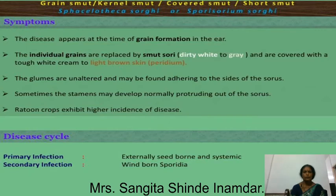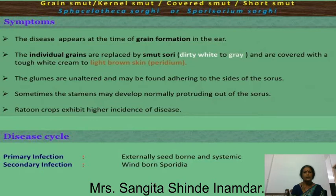Good morning everybody. The name of today's topic is the disease present on Javar plant. The first disease is grain smut of Javar. This disease is commonly found in Javar field and it causes too much loss.